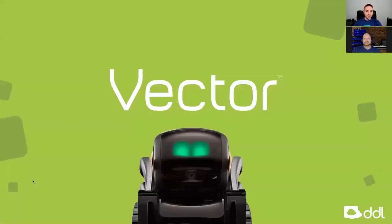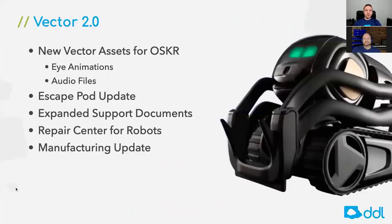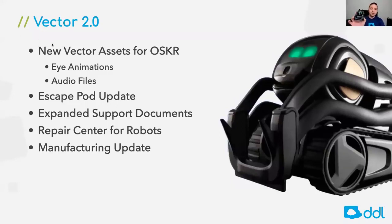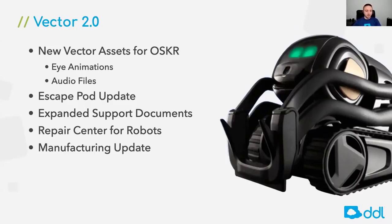Thanks, Matt. There's quite a bit going on with Vector right now. On the Oscar side, we've been working on quite a bit. Previously, you'd seen the animation assets for Oscar being released for Vector, and that allows you to really easily modify animations and the eyes — the procedurally generated eyes. You can modify basically the size of the eyes, the highlights, the specific hue and saturation, and all of this kind of stuff, customizing to your exact liking.